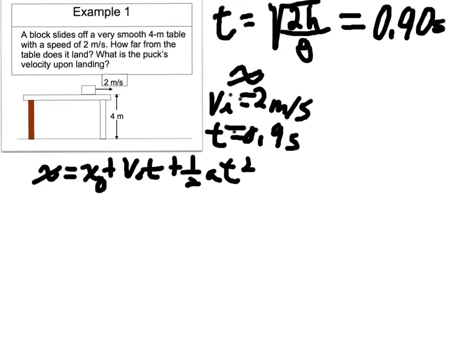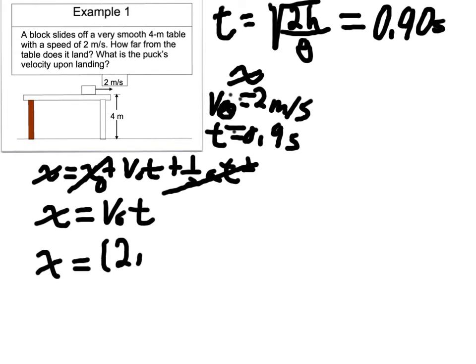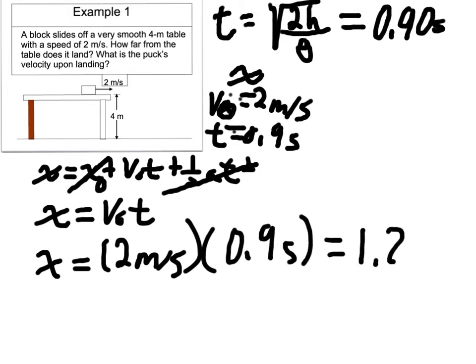Okay. So now we have a velocity, we have a time, we can easily find a position. This goes back to x equals x naught plus v naught t plus 1 half at squared. We called our starting place 0 in x, so x naught goes away. We know our initial x velocity. And we have no acceleration in x, so our equation is x equals v naught t. x therefore equals 2 meters per second times 0.9 seconds. And if you multiply that out you should get 1.8 meters. So that's how far from the table the puck lands.